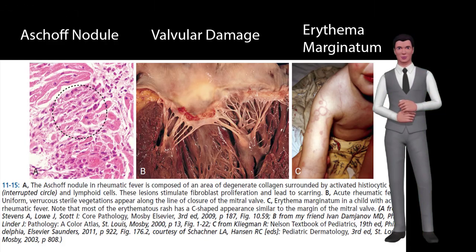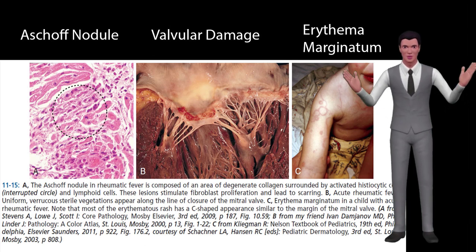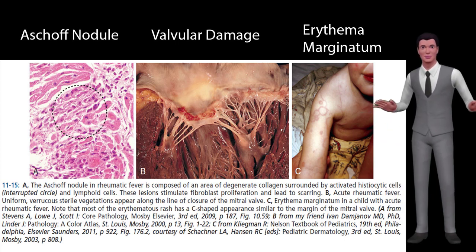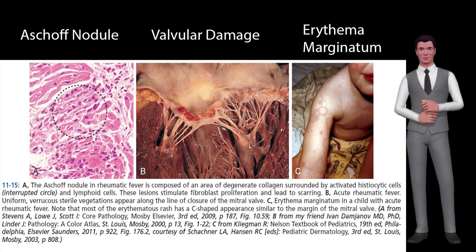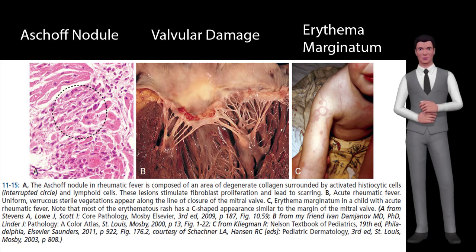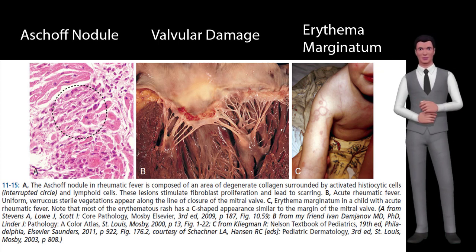Damage to the heart valves usually occurs only after multiple attacks but may occasionally occur after a single case of RF. The damaged valves may result in heart failure and also increase the risk of atrial fibrillation and infection of the valves. Carditis occurs in approximately 35% of cases and is the most serious complication of rheumatic fever, presenting as pancarditis that includes pericarditis, myocarditis, and endocarditis.